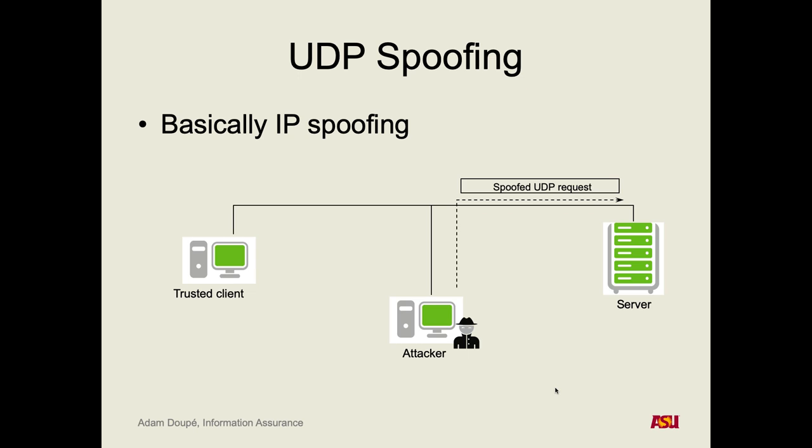When the server replies, the destination will be the trusted client and the source IP will be the server. So the attacker is not going to see that packet in the current setup. This is why we looked at exactly how packets travel and how indirect versus direct delivery works. When the server sends this UDP reply back, it goes through some hops and keeps going until it gets back to the trusted client.